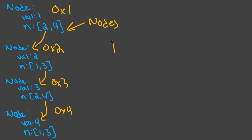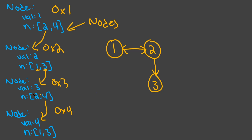The final graph would look something like this: 1 is connected to 2, and since it's undirected, 2 is also connected to 1. Then 2 is connected to 3. Node 3 is connected to 2 and 4. Node 4 is connected to 1 and 3. So we draw arrows both ways, and that forms the complete undirected graph.